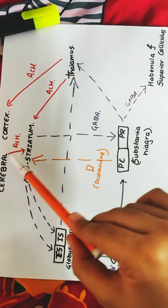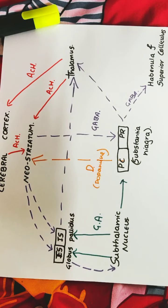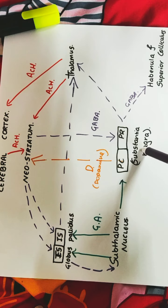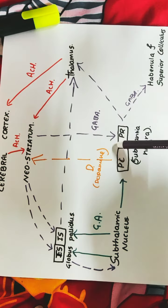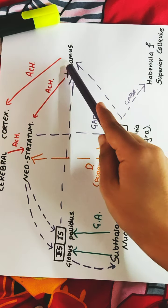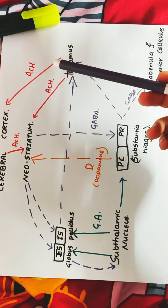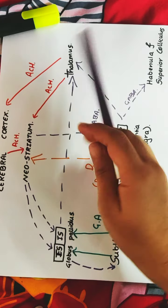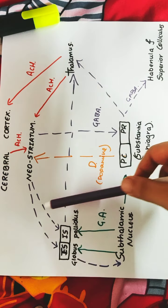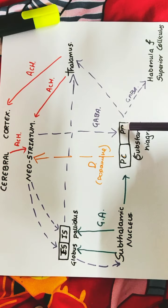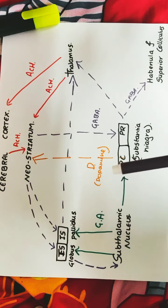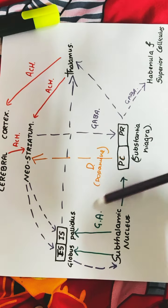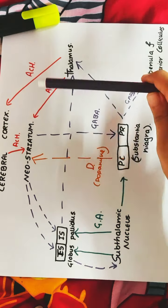To summarize the connections: inputs come from the cerebral cortex and thalamus to the neostriatum via acetylcholine. From the neostriatum, inhibitory GABA signals go to the external and internal segments of the globus pallidus and pars reticulata of the substantia nigra. The globus pallidus goes back to the thalamus; pars reticulata sends feedback to the thalamus, habenula, and superior colliculus. The thalamus sends excitatory signals back to the cerebral cortex. The subthalamic nucleus sends excitatory glutamate to globus pallidus and substantia nigra. Dopamine travels from pars compacta to neostriatum; decreased dopamine causes Parkinson's disease.